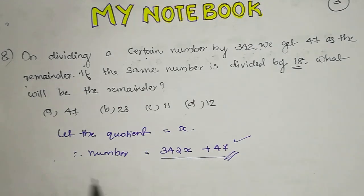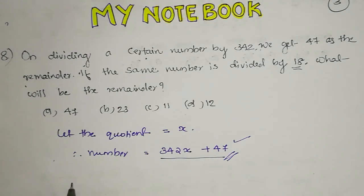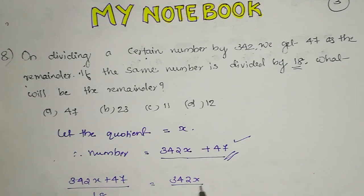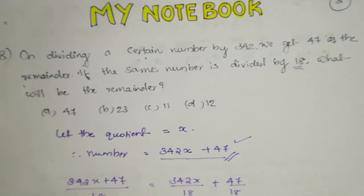So we need to divide this number by 18. So, 342x plus 47 divided by 18. We need to divide it separately: 342x by 18 plus 47 divided by 18. This 18 is the common denominator for 342x and 47.